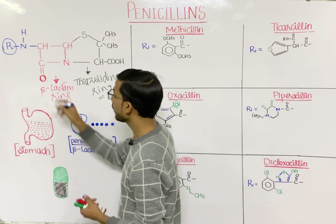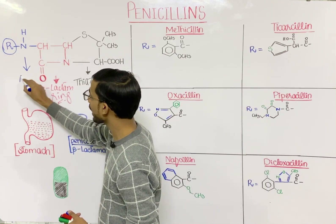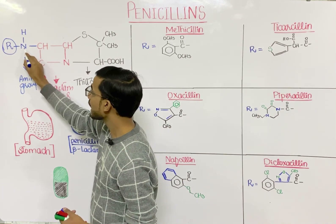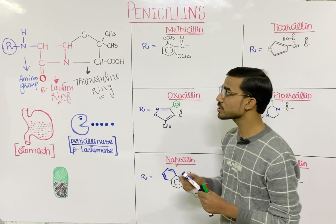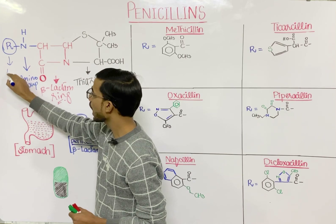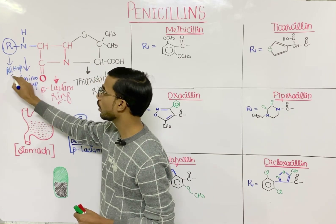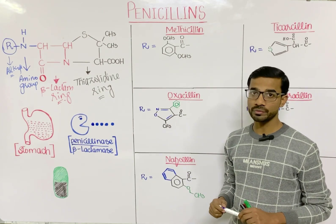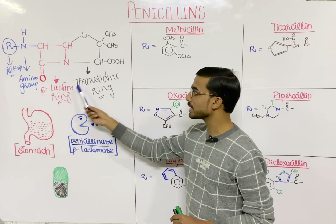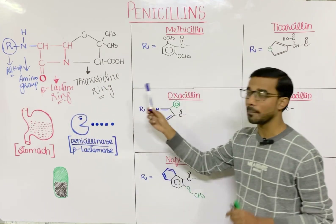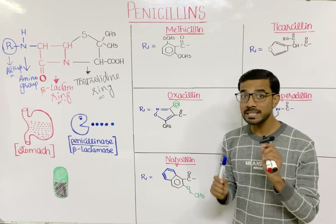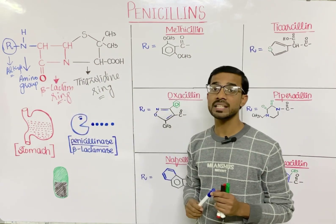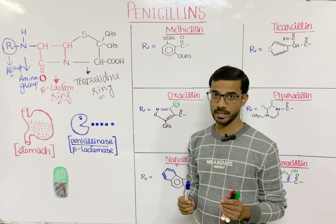The third component is the amino group, that is the NH. The fourth and last component is the alkyl, or R group. Three components — the thiazolidine ring, the beta-lactam ring, and the amino group — are common among all different types of penicillin. These three components collectively are called 6-aminopenicillanic acid.